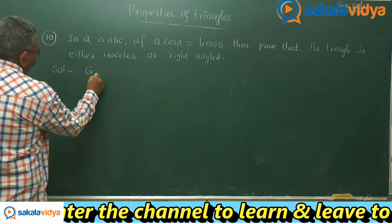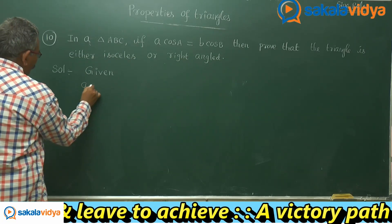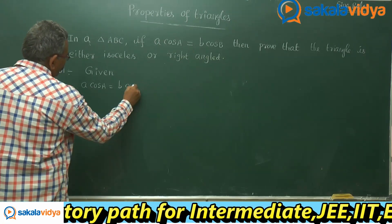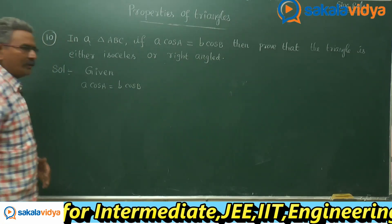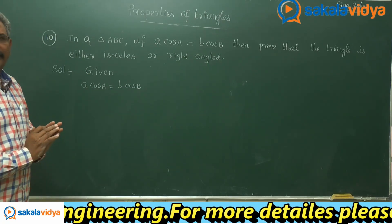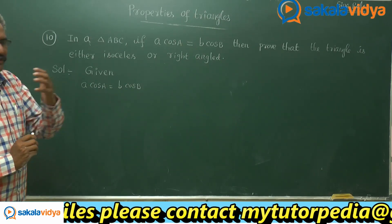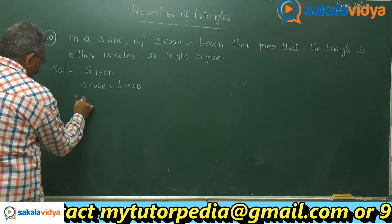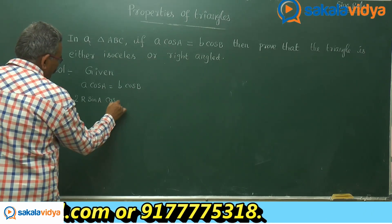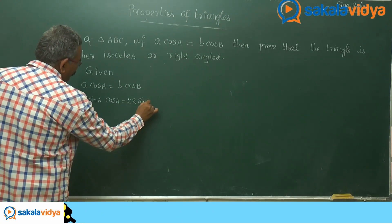Given: A·cosA equals B·cosB. Now, A and B are replaced by 2R·sinA and 2R·sinB respectively, using the sine rule. This gives us 2R·sinA·cosA equals 2R·sinB·cosB.